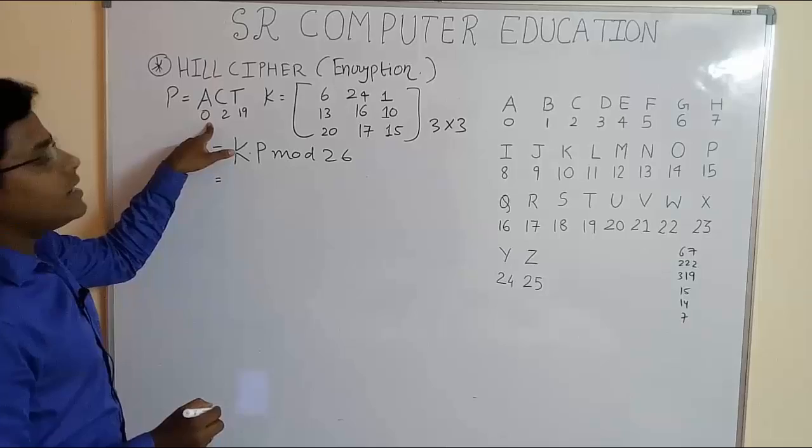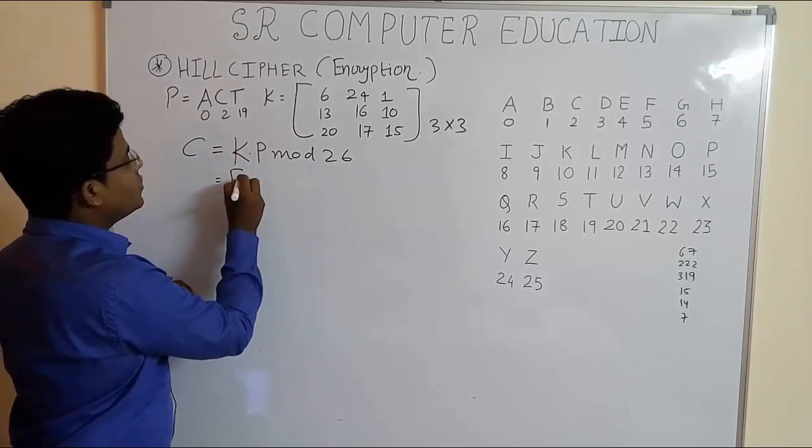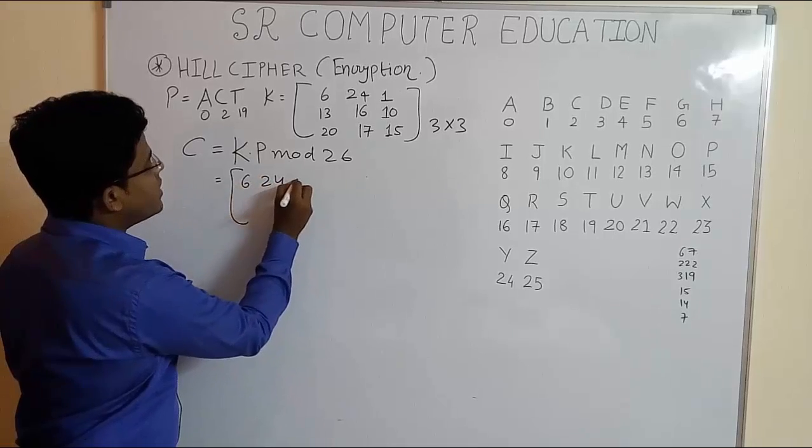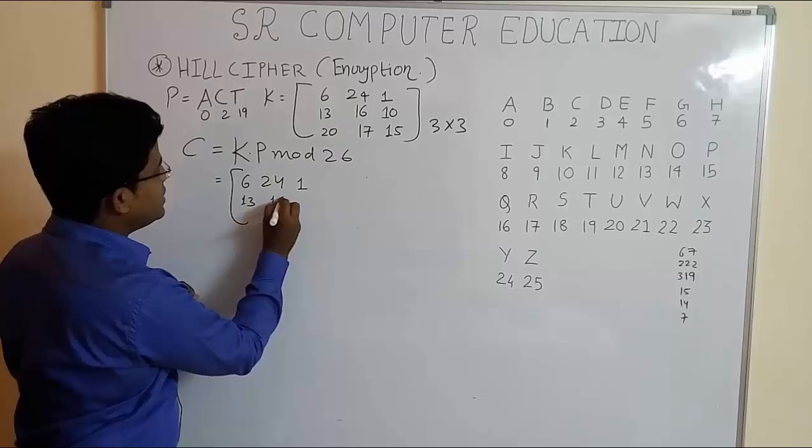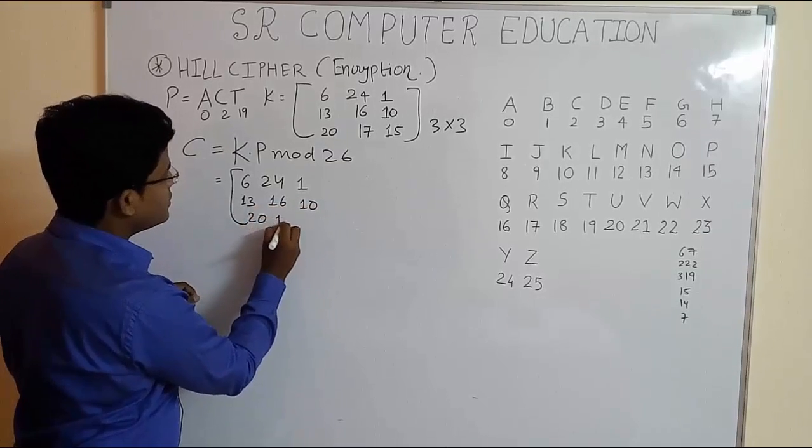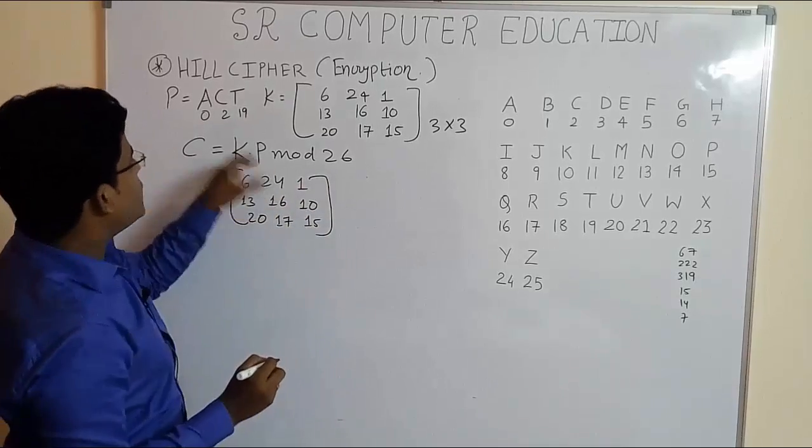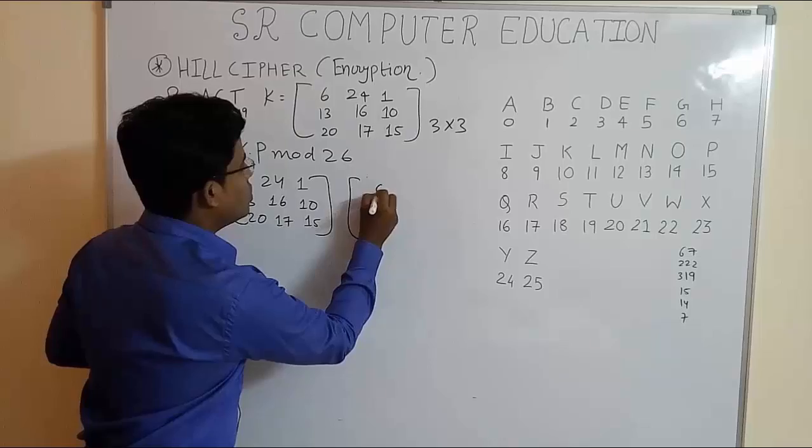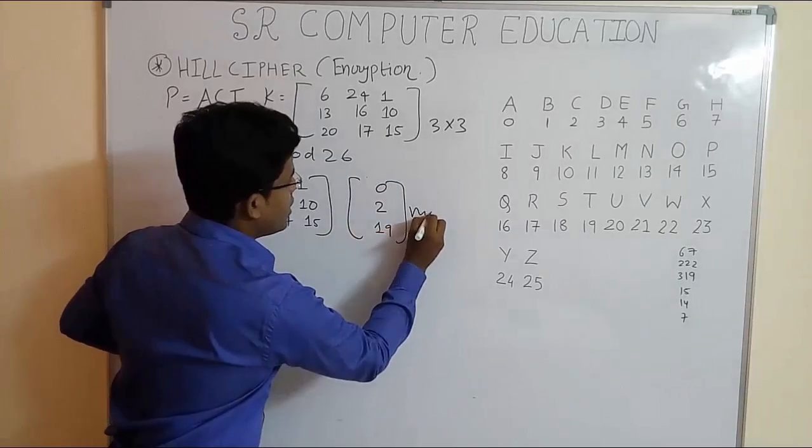Now convert this plaintext into matrix form and substitute in the formula. The key matrix K is 6, 24, 1, 13, 16, 10, 20, 17, and 15. P is 0, 2, and 19. And we already have mod 26.